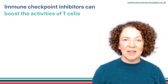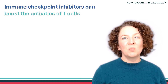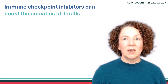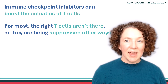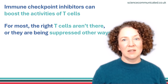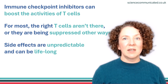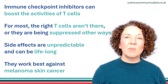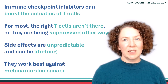To recap: immune checkpoint inhibitors are antibody-based treatments that can boost T cells by preventing and reversing T cell suppression. For many people, they don't work either because the right T cells aren't there or because they're blocked in other ways that don't involve the checkpoint proteins. These treatments can also cause unpredictable and sometimes long-lasting side effects. But for some people, especially people with melanoma skin cancer, these treatments have made a huge difference, even offering the chance of cure.